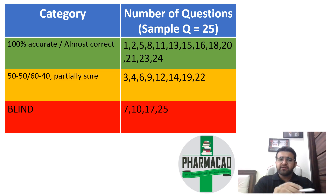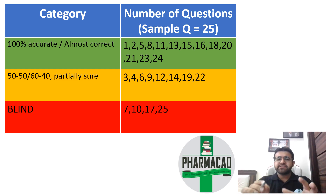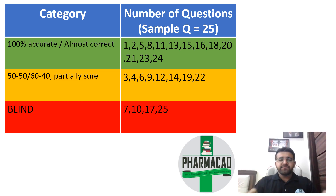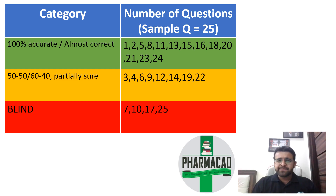You will make a table. How many questions are 100% accurate — if you think a question is 100% accurate, you write that number. I have made a sample set of 25 questions. If you are 50-50 confused between 2-3 options, those questions fall into the second category. And the third category is completely blind.